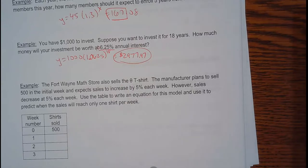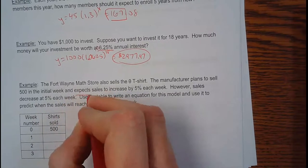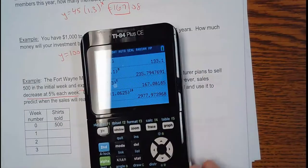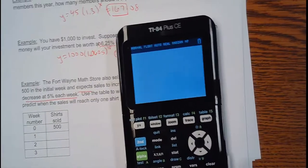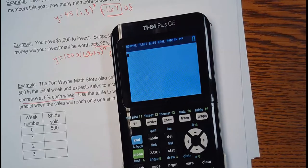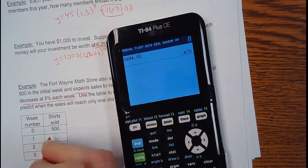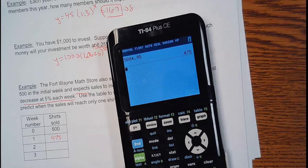The Fort Wayne Math Store also sells theta t-shirts. Theta is just, if you remember from geometry, it's how you measure an angle. X is typically a length and theta is typically an angle. The manufacturer plans to sell 500 in the initial week and expects to increase 5% each week. However, sales decrease at 5% each week. So, it was expected, but it didn't. So, sales actually decreases 5% every week. Use a table. Remember, when I decrease 5%, I want to know how much I kept. So, if I lost 5%, I'm going to keep 95%. So, I take 500 times 0.95, I got 475. That's a 5% decrease.